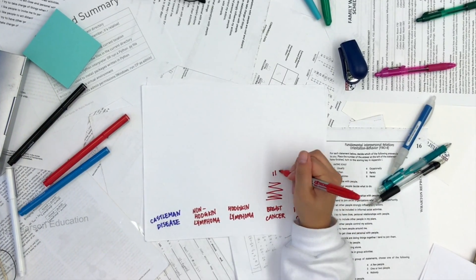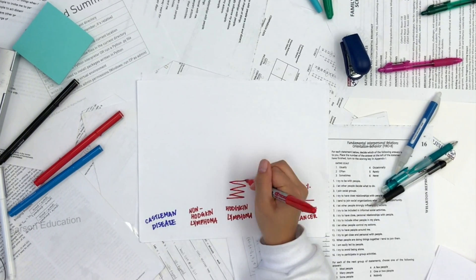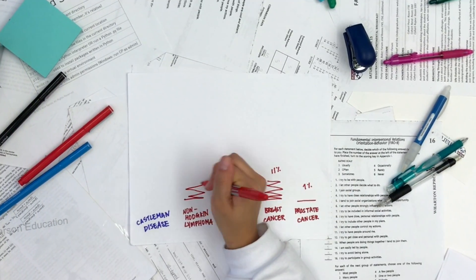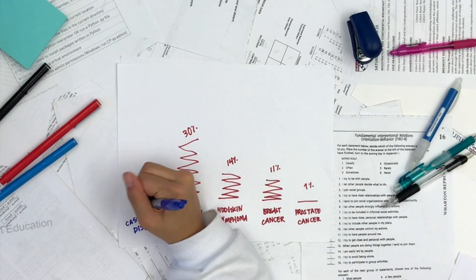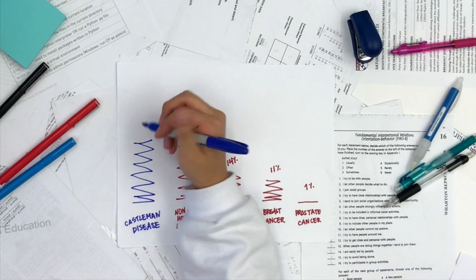Breast cancer, 11%. Hodgkin lymphoma, 14%. Non-Hodgkin lymphoma, 30%. And lastly, 35% of patients with multicentric Castleman disease die within 5 years of diagnosis.